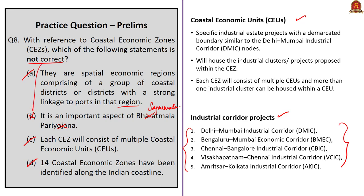Option B in the question is not correct because coastal economic zones are part of the Sagarmala program, not the Bharatmala Pariyojana. Both are different. Bharatmala Pariyojana is an umbrella program for the highway sector, focusing on optimizing freight and passenger movement efficiency by bridging critical infrastructure gaps through developing economic corridors, inter corridors, feeder routes, national corridor efficiency improvement, border and international connectivity routes, coastal and port connectivity routes, and greenfield expressways. So Bharatmala is related to highway and roads development. Here option B is the correct answer since the statement in option B is not correct.